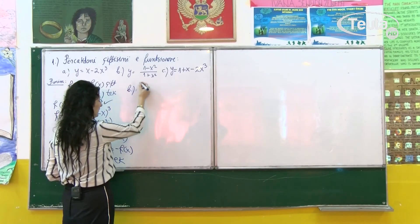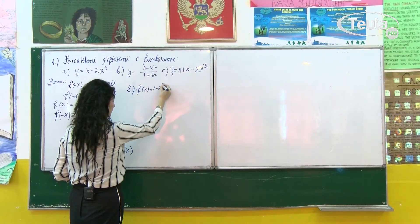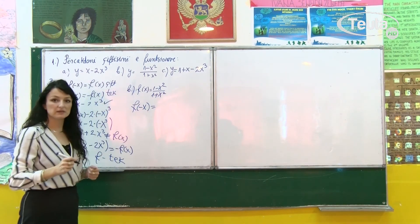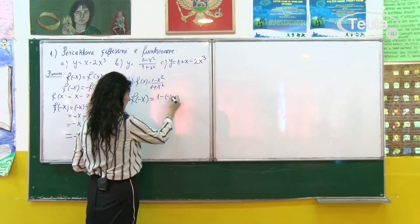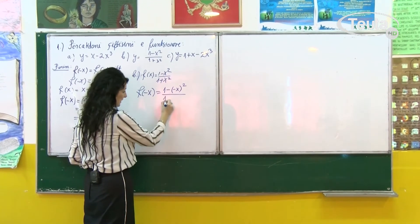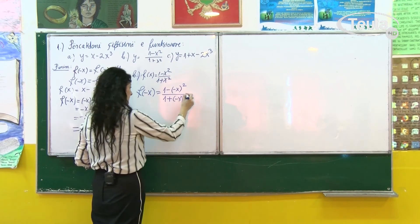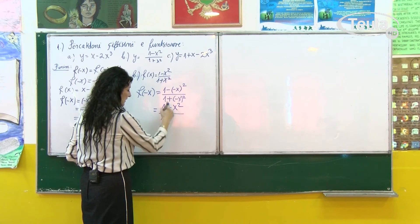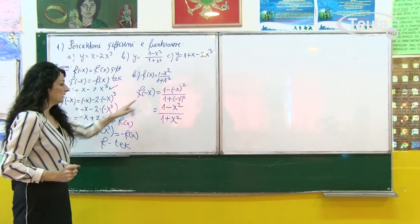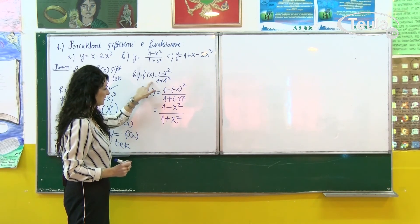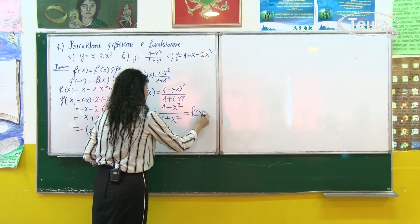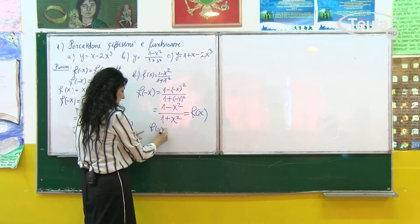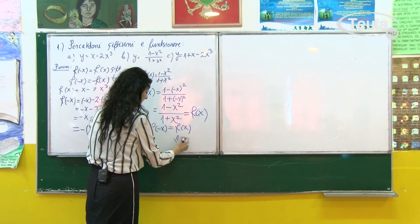Vazhdojmë rastin e dytë, shembullin b: kemi funksionin f(x) = (1 - x⁴) / (1 + x⁴). Në mënyrë të njëjtë fillojmë të zëvendësojmë dhe shohim si sillet funksioni nëse në vend të x-it zëvendësojmë -x. Kemi f(-x) = (1 - (-x)⁴) / (1 + (-x)⁴). Nëse rregullojmë këtë shprehje fitojmë: meqë fuqia 4 është çift, minusi anulohet, dhe kemi (1 - x⁴) / (1 + x⁴). Shprehja që kemi fituar është plotësisht identike me vlerën fillestare. Pra funksioni është i barabartë me f(x), dhe arrijmë në përfundim: funksioni plotëson kushtin f(-x) = f(x), pra është funksion qift.